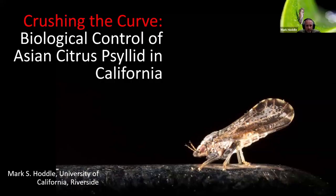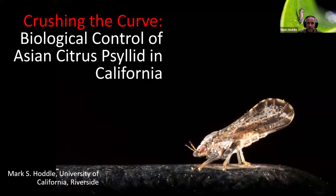Good afternoon, everybody. Thank you for taking time out this afternoon to participate in this Ag Expert webinar. We're going to be talking about the biological control program we've run out of UC Riverside targeting the Asian citrus psyllid, which is an invasive pest in California that spreads a bacterium, Candidatus Liberibacter asiaticus, that causes a lethal disease in citrus called Huanglongbing.